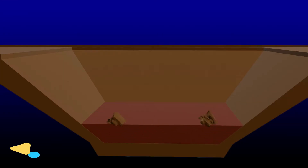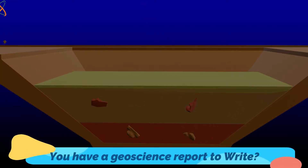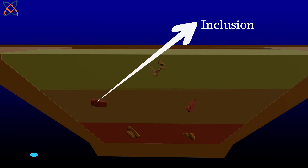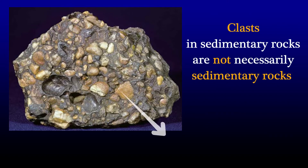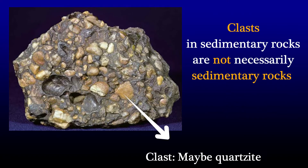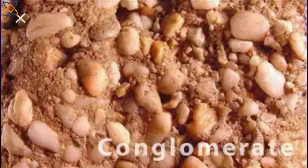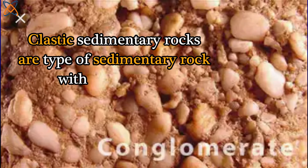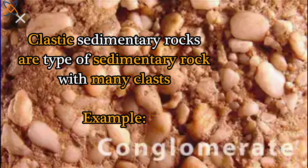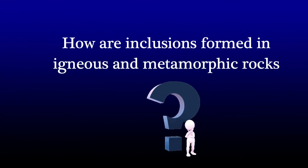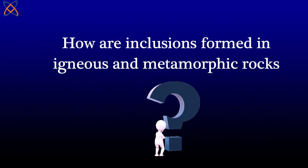Clasts are formed when large rocks are not completely broken down to smaller sizes because of their resistance to weathering, and they are deposited alongside other weathered sediment in the sedimentary basin. Clasts in sedimentary rocks are not necessarily sedimentary rocks themselves — clasts are mostly of igneous or metamorphic origin. An example of a clastic sedimentary rock is conglomerate.